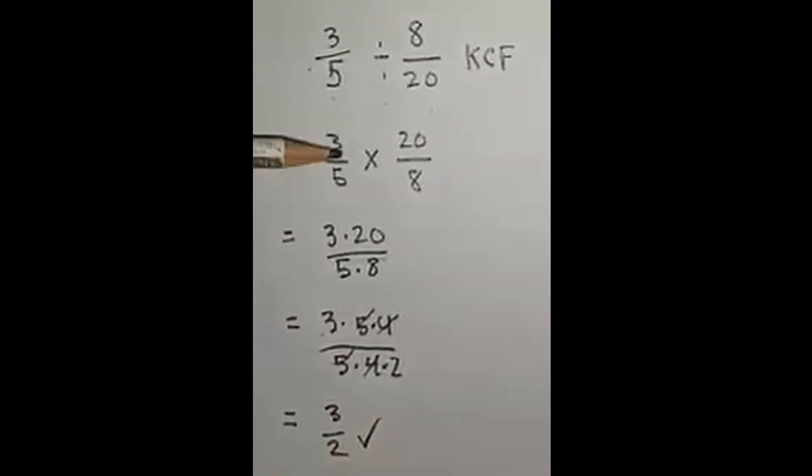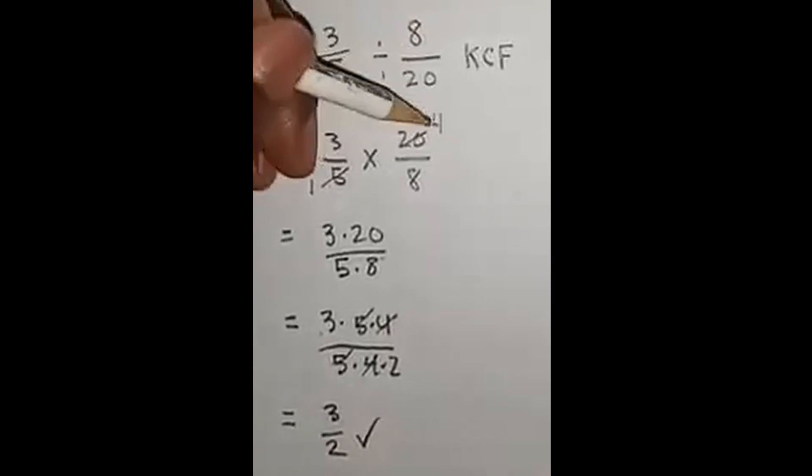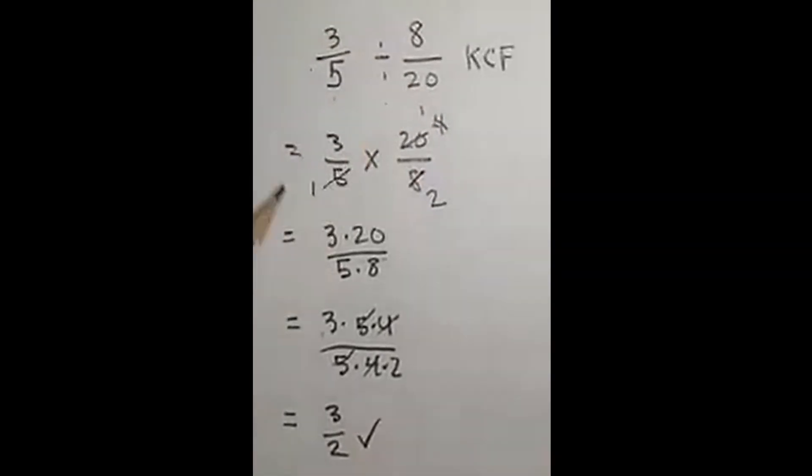I can cancel, cancel, cancel. I'm left with 3 over 2. Everything's positive so I don't need to worry about the signs. If you're strong at reducing, the shorter version would be we'll reduce right here. 5 goes into 5 one time, into 20 four times. 4 goes into 4 one time, into 8 two times. 3 times 1 is 3 over 1 times 2 is 2. 3 over 2, same answer.